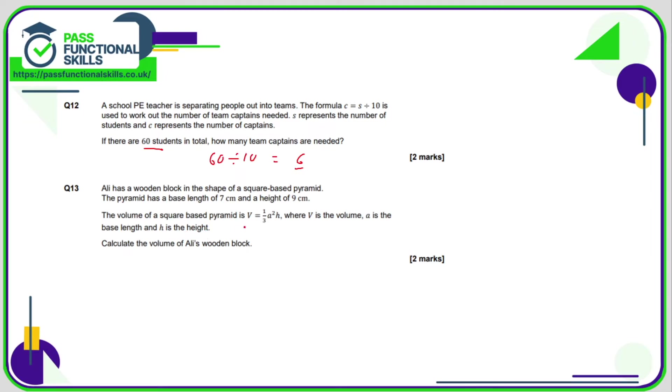Question number 13: we're using this formula here—the volume is ⅓a²h. So what that means is one-third times a times a times h, or alternatively a times a times h divided by 3. We have a is 7, so it's 7 times 7 times 9 divided by 3. And 7 times 7 times 9 divided by 3—that comes to 147.